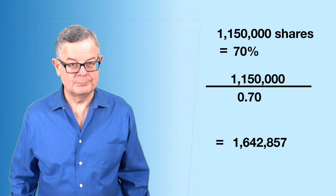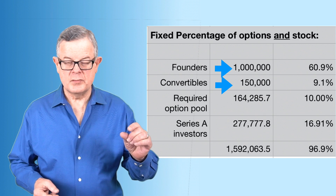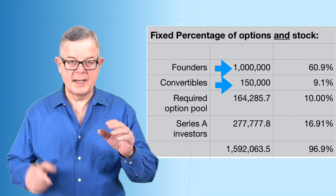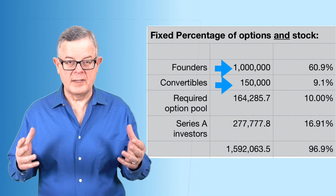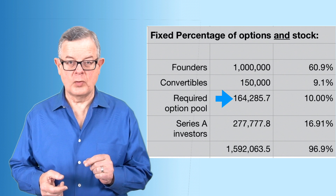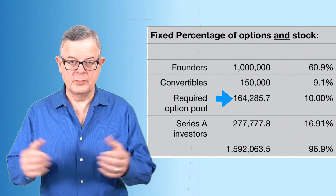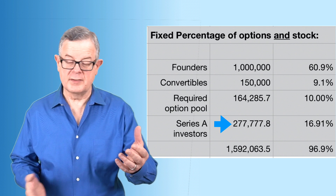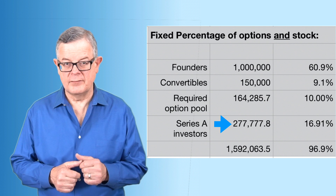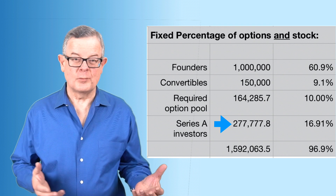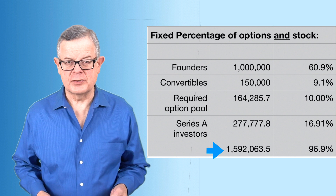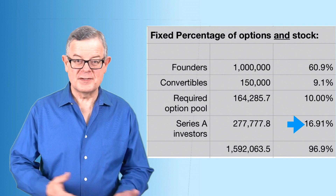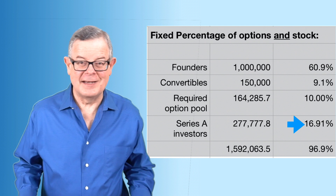Building the cap table with these assumptions, we get about 1.5 million shares — but that's not the 1.64 million we calculated, and the Series A investors don't own 20 percent; they own 16.91 percent. What went wrong is we chose the wrong stock price. We started with $7.20, the same as scenario one — but clearly, to give the Series A 20 percent, that price is too high. The price needs to be lower so their money goes farther and gets them more shares.